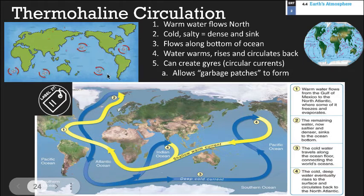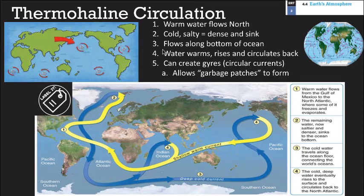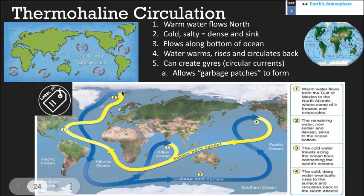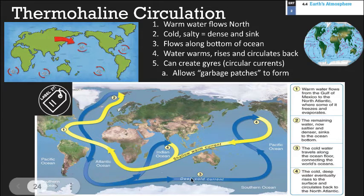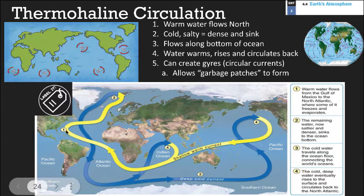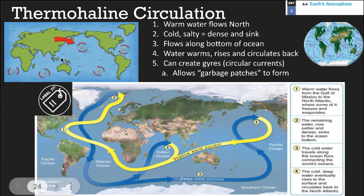Ocean currents are basically a function of warm and cold water. Salty concentrations also affect them. Cold water is more dense and sinks; salty water is more dense and sinks — that causes currents to turn around. Near the poles, water gets colder and denser, starts to sink, and flows back in the reverse direction and deeper. Deep cold ocean currents are deeper, while warmer currents are more shallow. This is our oceanic conveyor belt. They can also create gyres — circular patterns of current in five main areas of the oceans that can create things like ocean garbage patches.